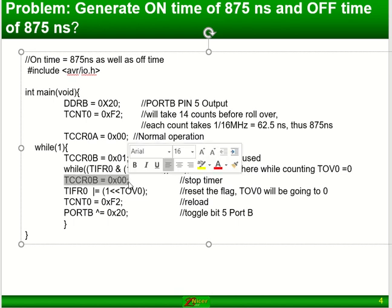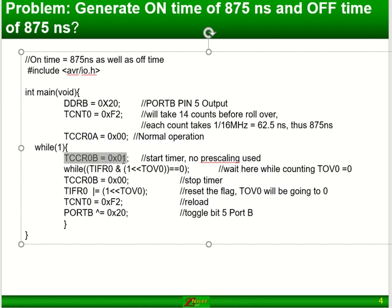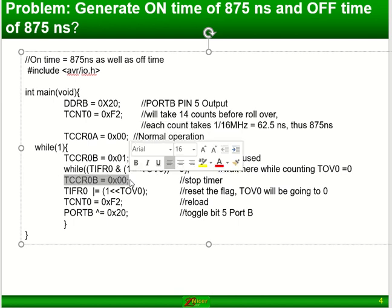If I load 00 into the control register B, it will actually stop the timer. By loading 0,1 I start the timer, by loading 00 I stop the timer. If you want to reset the flag, you have to load a 1 into the TOV0 flag.